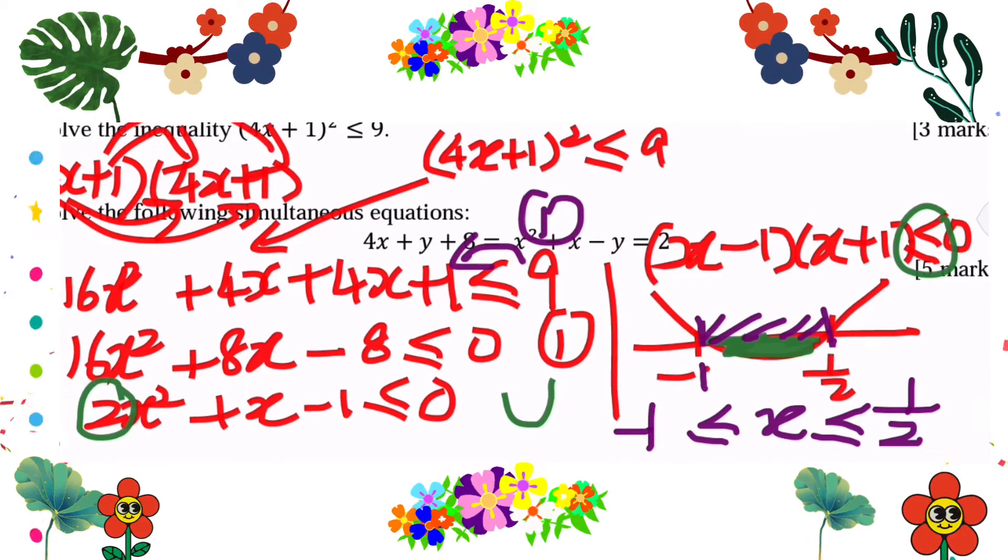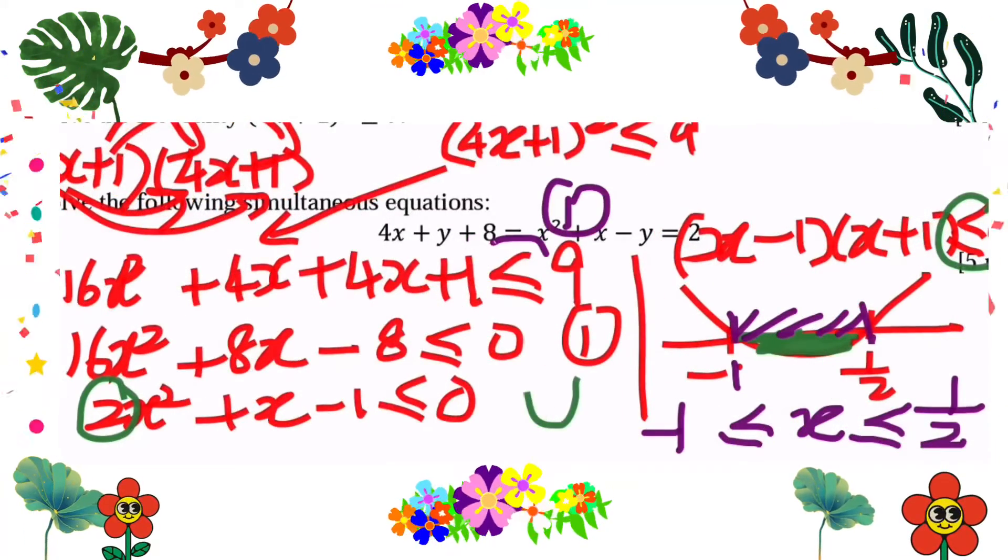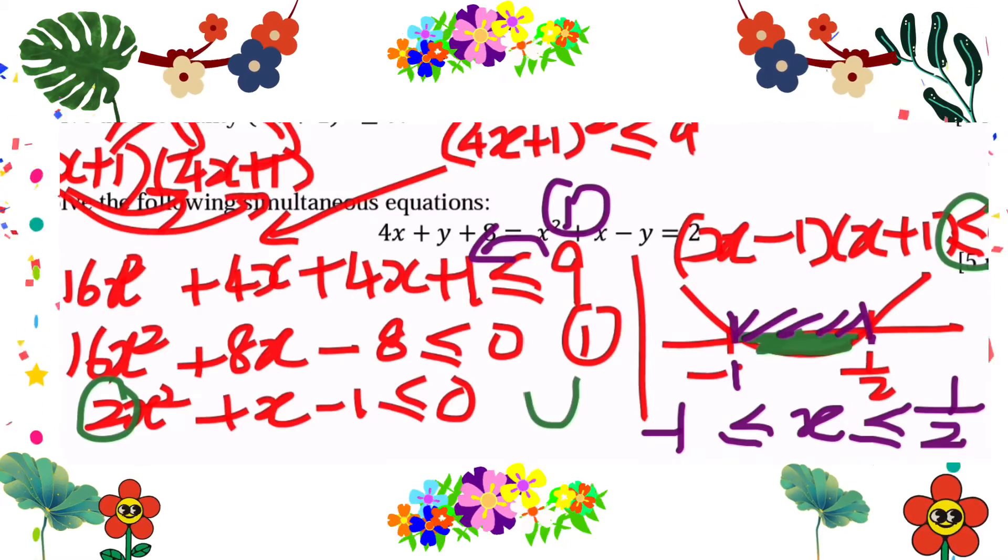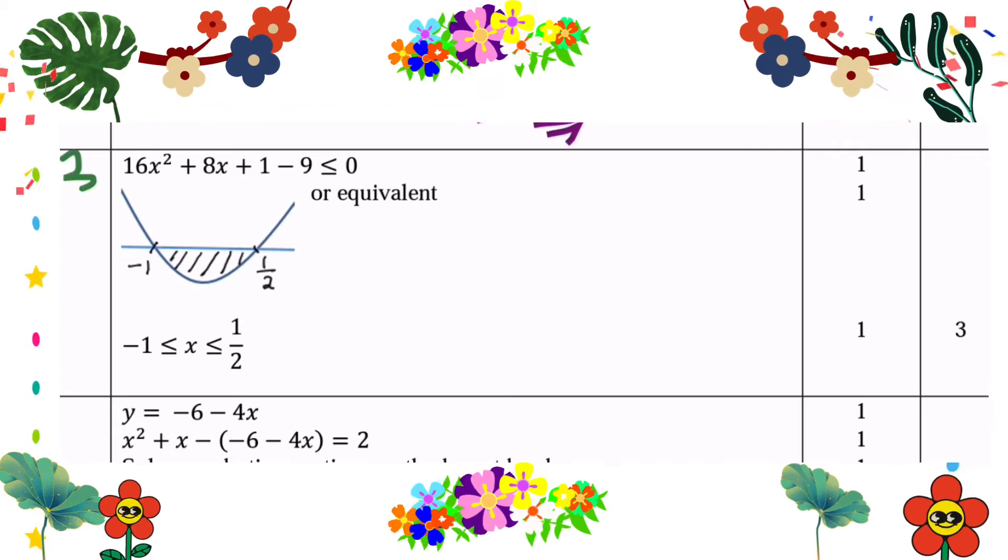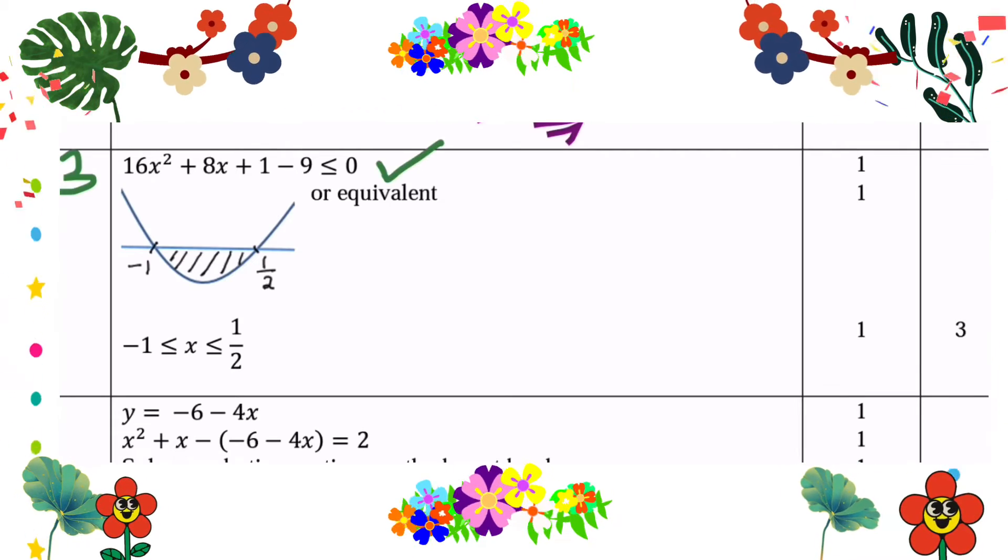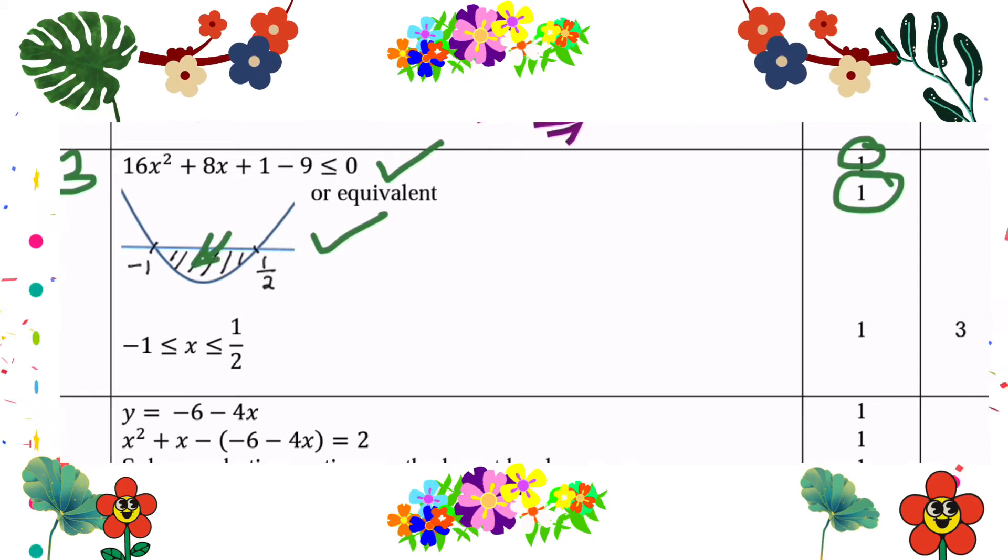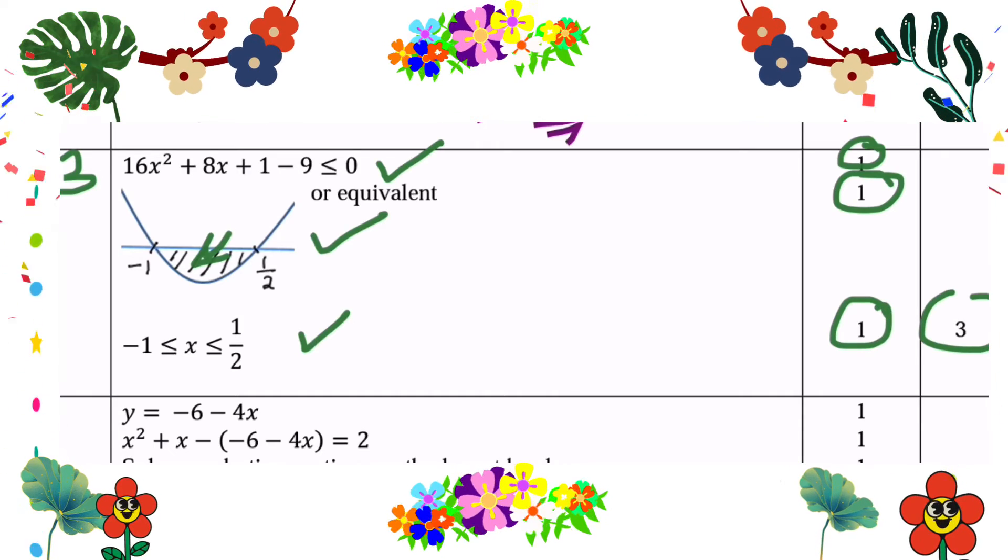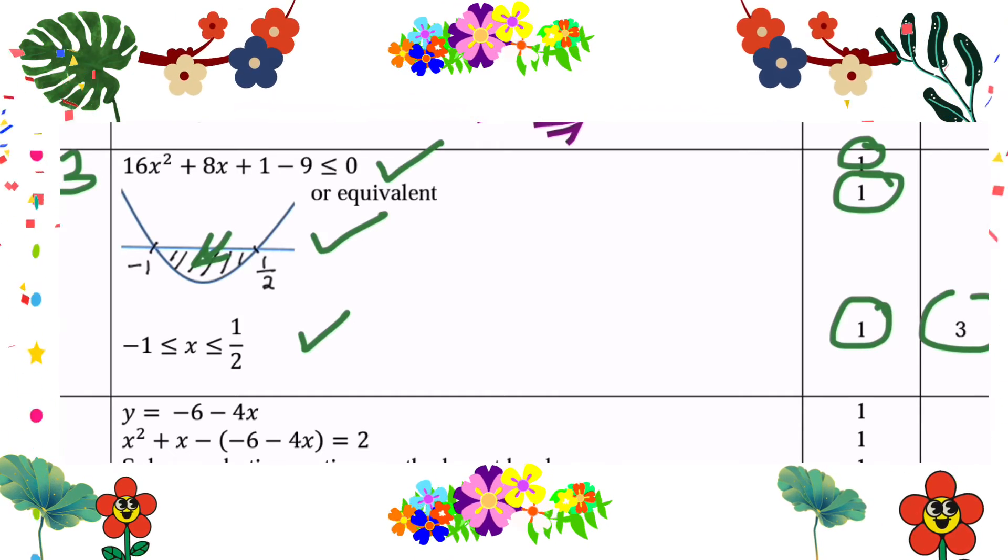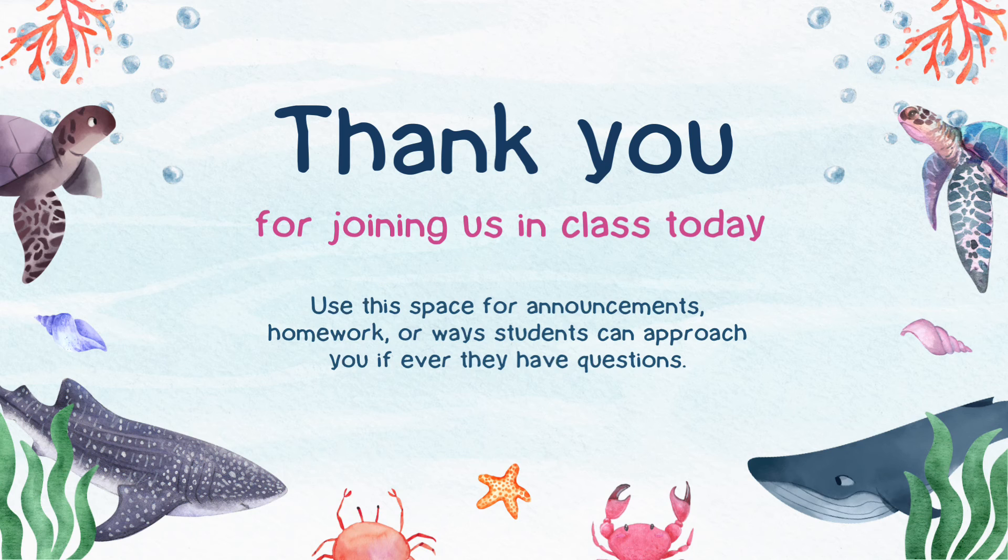So the marks will be given if you expand correctly and arrange in general form. Let's have a look at the marking scheme. General form after rearranging will be one mark, and shaded region for the function which is less than equal 0, and the range of values of x. Thank you.